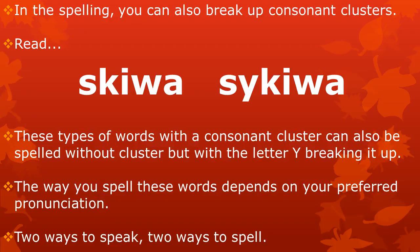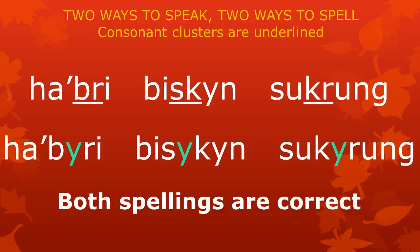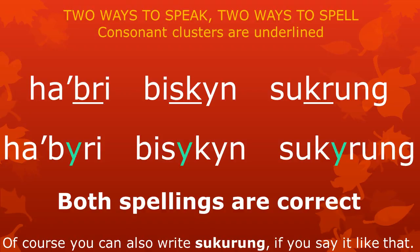In the spelling, you can also break up these consonant clusters. These types of words with a consonant cluster can also be spelled without the cluster, but with the letter E breaking the cluster up. The way you spell these words depends on your preferred pronunciation — there are two ways to speak and two ways to spell. So we can write HABRI, BISKIN, SUKRUN, just as we can write HABERI, BISIKEN, SUKURUN. Both spellings are correct. You can also write SUKURUN with three syllables if you say it like that. Atong spelling is very flexible.